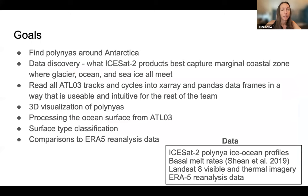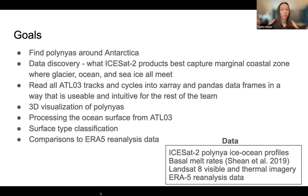The goals for our work were: first, to find the polynias around Antarctica that had ICESat-2 tracks across them; then do some data discovery to figure out what products would be most useful for ICESat-2, because this is a marginal zone along the coast where glacier, ocean, and sea ice all meet, and there are lots of different products for each of these and we weren't sure which ones would be best.